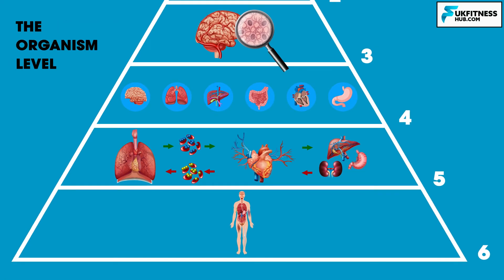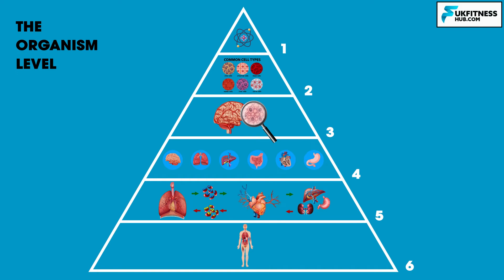Finally we have Level 6: the organism level. The overall human organism is made up of all of the previous levels we've just covered. When all of the systems of the human body combine we have the organism level. We can only function the way we do by the 11 systems working together to perform an incredibly wide range of functions which we all take for granted in day-to-day life, such as breathing, moving and digesting food.